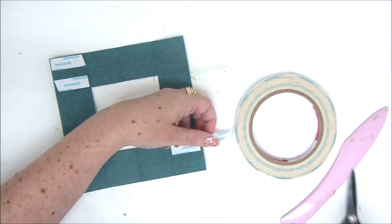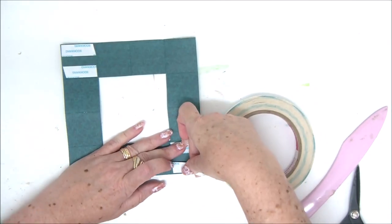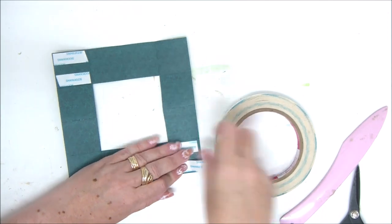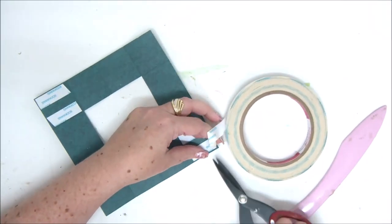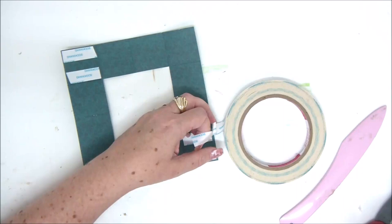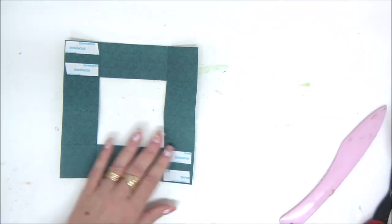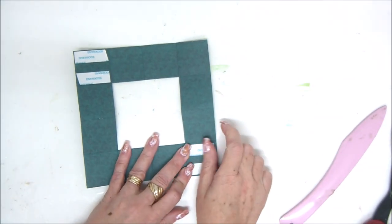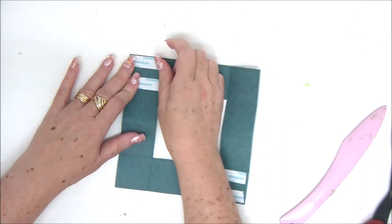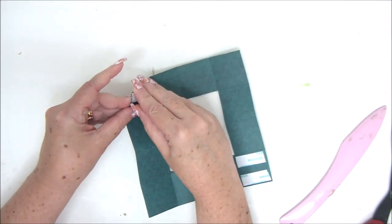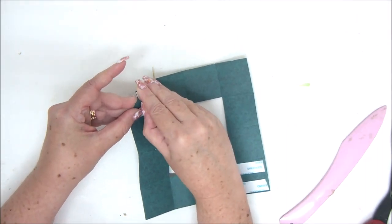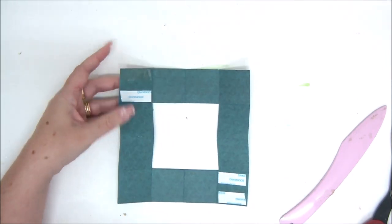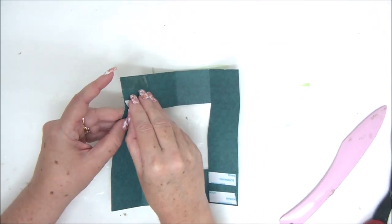Also apply glue to the right bottom square as well. So we're starting by applying the glue to these two squares and then we have to remove the backing which can sometimes be really annoying especially if you have nails like me. So just remove the backing.